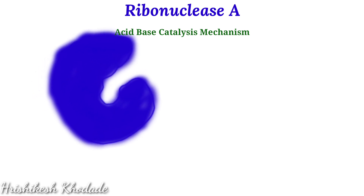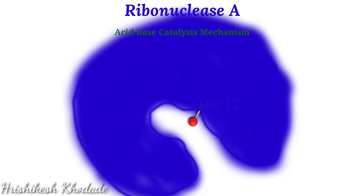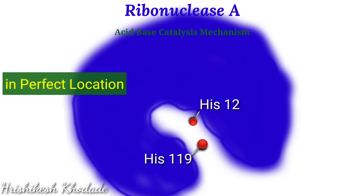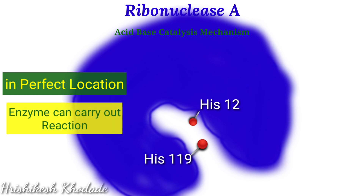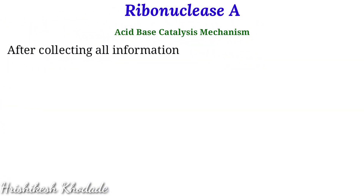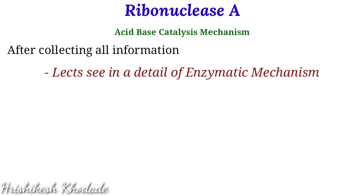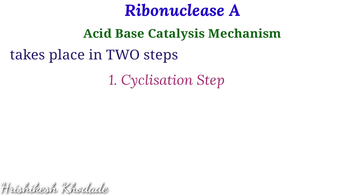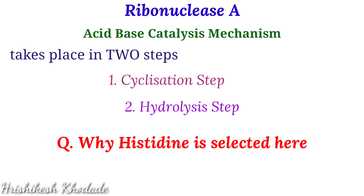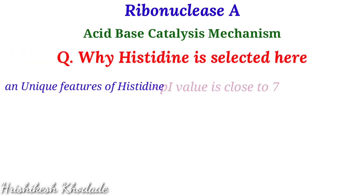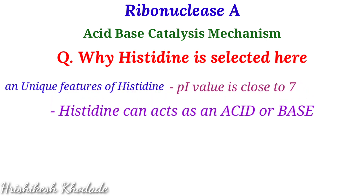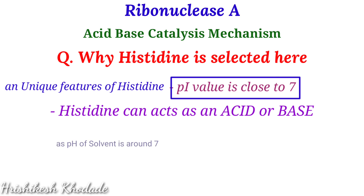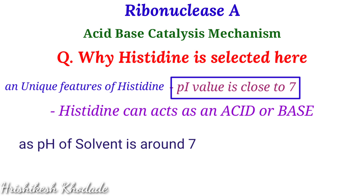When the three-dimensional structure of ribonuclease A forms, the active site positions histidine-12 and histidine-119 such that they can carry out the reaction. The whole reaction falls under acid-base catalysis and happens in two steps: the first step is the cyclization step and the second is the hydrolysis step. Histidine is selected here because of its unique feature — its pI value is near 7 — which means histidine can act as either an acid or a base depending on the situation, since pH 7 is the solvent pH at which these reactions occur in the cell.